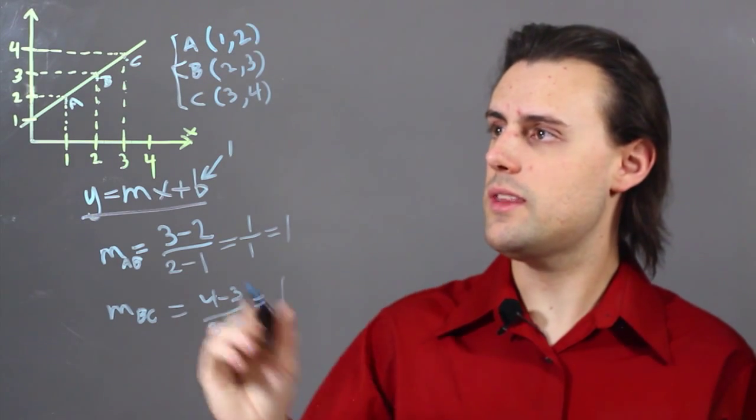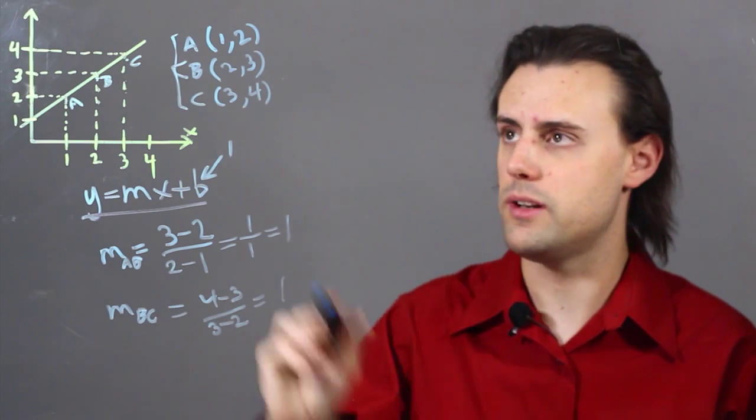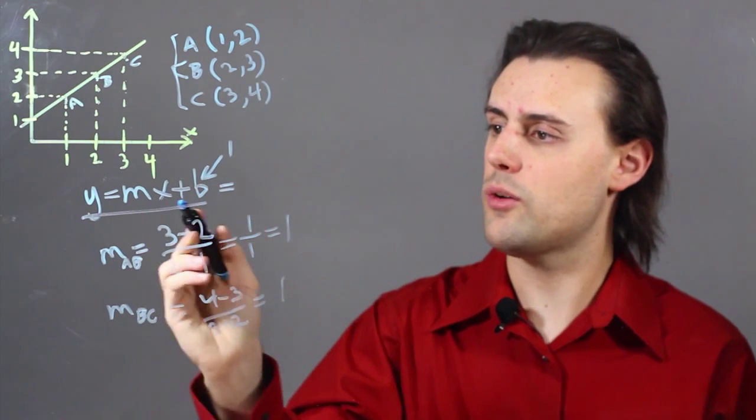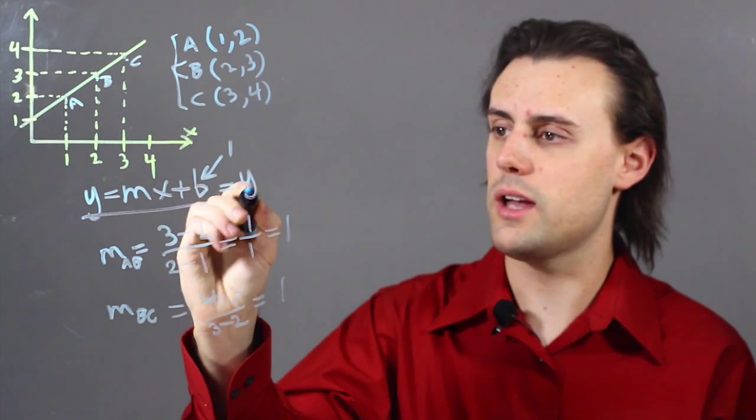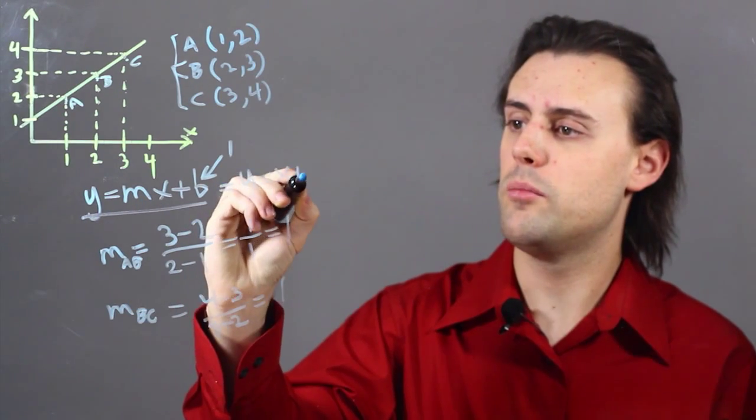So we see that, indeed, there is linear behavior in this graph from the data that we've collected, and so we can write our slope-intercept equation as y equals 1 times x plus 1.